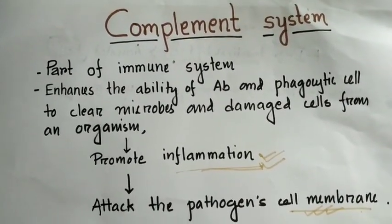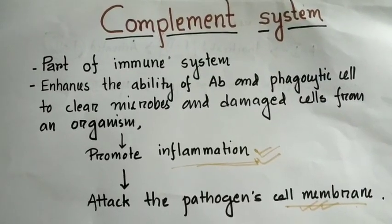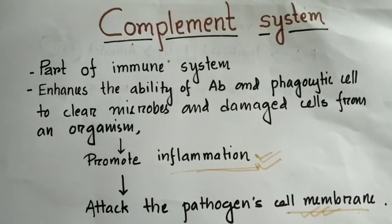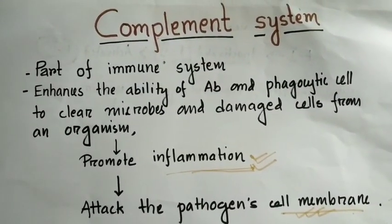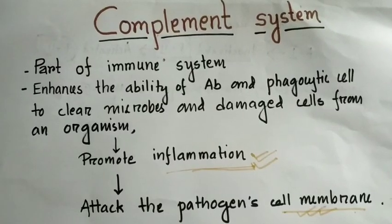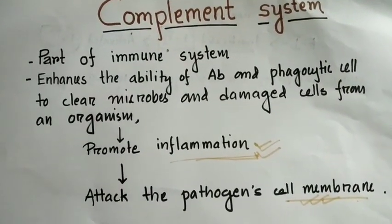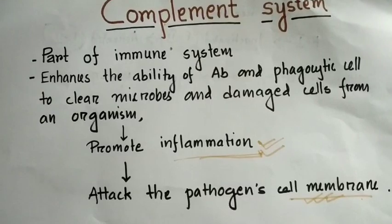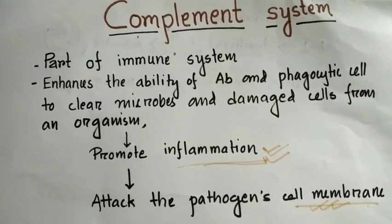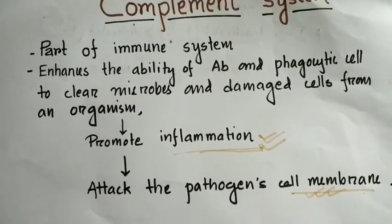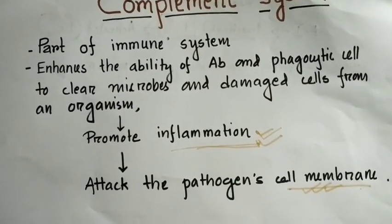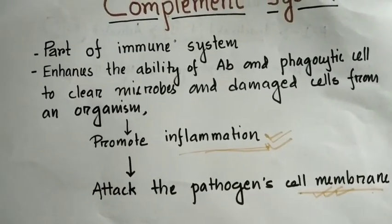The complement system is the body's defense mechanism against antigens and foreign particles. It is a part of the immune system which enhances the ability of antibodies and phagocytic cells to clear microbes and damaged cells from an organism. It promotes inflammation and attacks the pathogen. The complement system is also known as a cascade reaction.